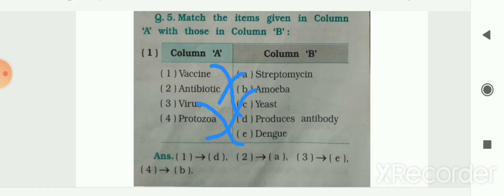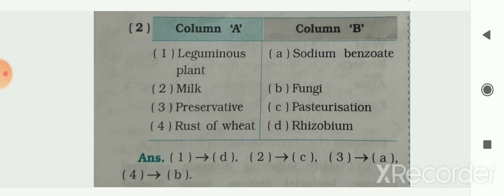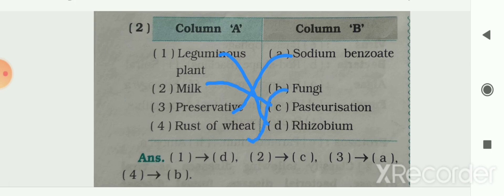Next matching: Column A has leguminous plant, milk, preservative, and rust of wheat. Column B has sodium benzoate, fungi, pasteurization, and rhizobium. Leguminous plant — rhizobium, as rhizobium lives in the root nodules of leguminous plants. Milk — pasteurization, as we do pasteurization to preserve milk. Preservative — sodium benzoate. Rust of wheat — fungi. The answer for this matching is also given to you.